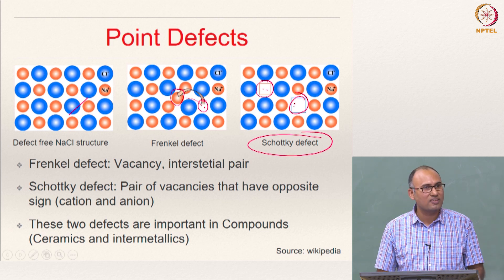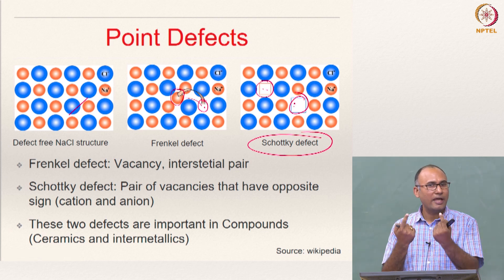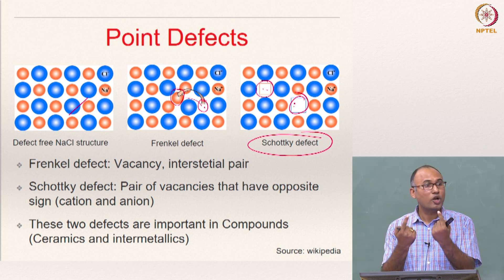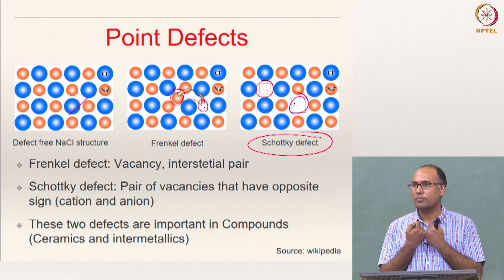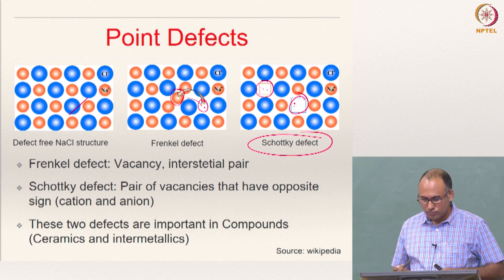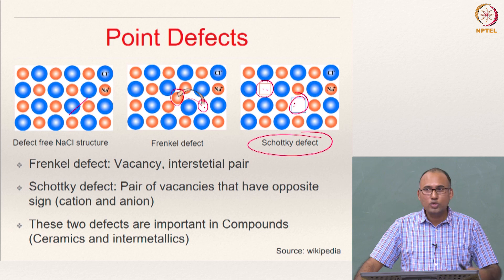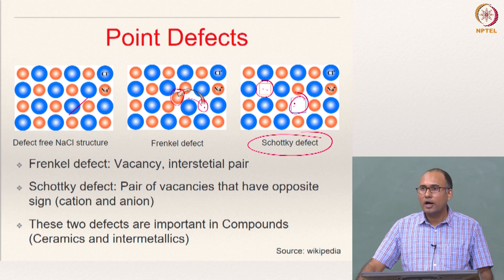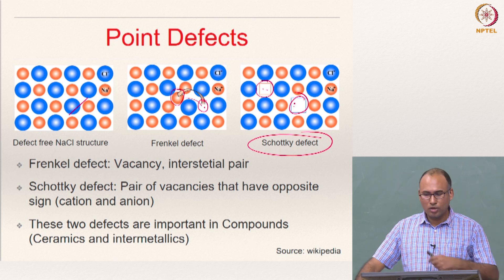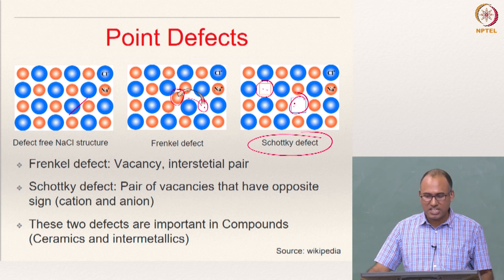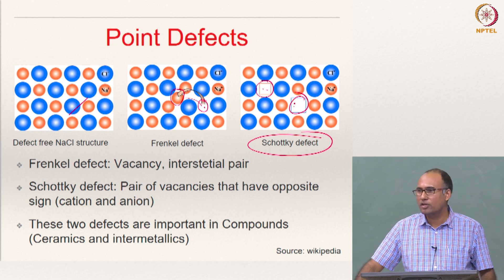So you have a pair of vacancies which are of opposite sign. One is anion and another is a cation. They are not present in the crystal lattice and such a pair is called Schottky defect. So these two kinds of defects are usually found in compounds, ceramic compounds, ceramics and intermetallics. So it is very important to understand these two kinds of defects and their role in the mechanical behavior of these ceramics.